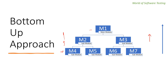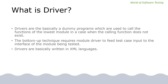which we call drivers. To test the lower level models m4, m5, m6, and m7, we must have the counterpart of the m2 model — that is the driver. Drivers are dummy programs used to call the functions of the lowest module when the calling function does not exist, meaning it is under development. The bottom-up technique requires a driver to feed test case inputs to the interface of the module being tested. Drivers are basically written in XML.